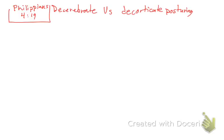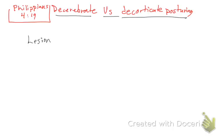So with decerebrate versus decorticate posturing, you will see two things. The main keyword here is 'lesion.' Where is that lesion going to happen? We'll start with the decerebrate first.